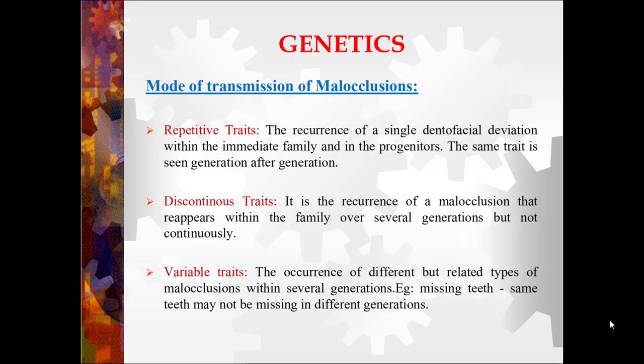About the mode of transmission of malocclusions. First is repetitive traits: the recurrence of a single dentofacial deviation within the immediate family and progenitors — the same trait is seen generation after generation. Second, discontinuous traits: the recurrence of a malocclusion that reappears within a family over several generations but not continuously — that is, the malocclusion is not repeating immediately but after some generations. Third, variable traits: the occurrence of different but related types of malocclusion within several generations — for example, missing teeth, where the same teeth may not be missing in different generations.